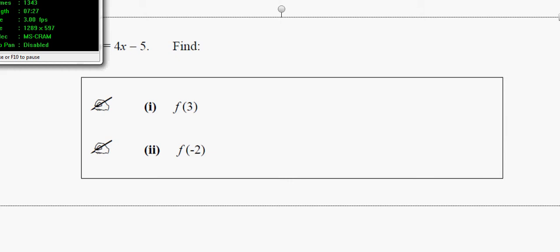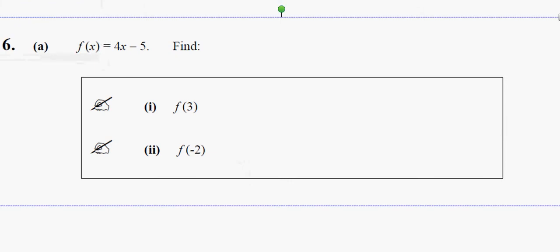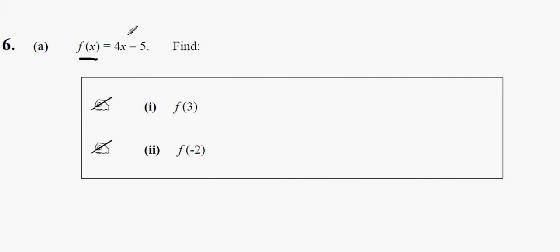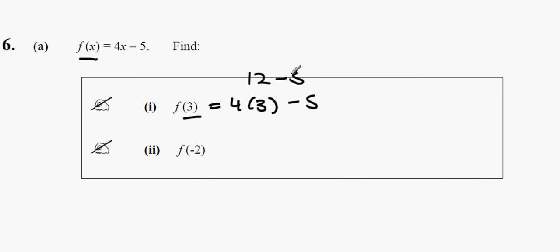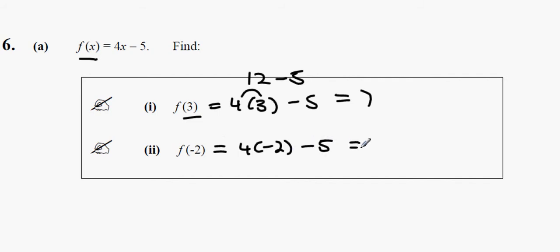In this part we have f(x) equals 4 multiplied by x minus 5. f(3) basically means replace x with 3, so you get 4 times 3 minus 5, which is 12 minus 5 — the answer is 7. The next one gives 4 multiplied by minus 2 minus 5, which is minus 8 minus 5, equalling minus 13.